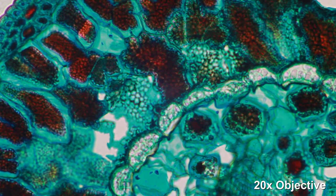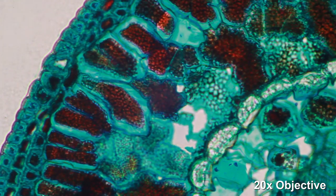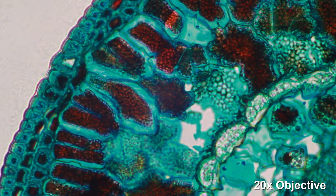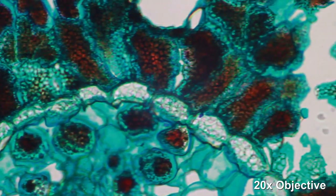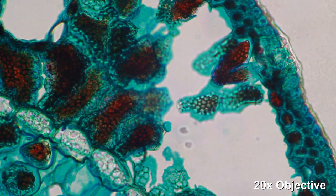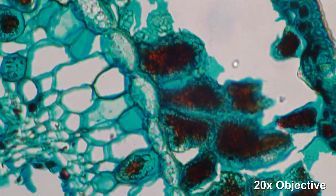Again, here the endodermis is quite well visible. You can see that the company that made them used various stains, and for this reason the different parts of the pine leaf have different colors.